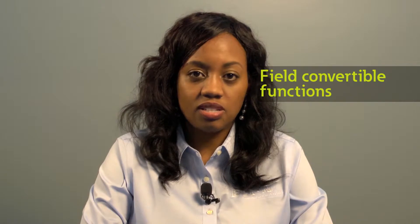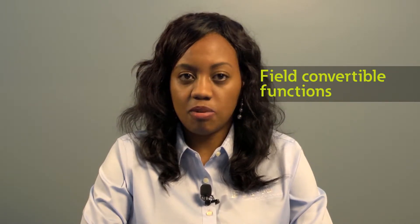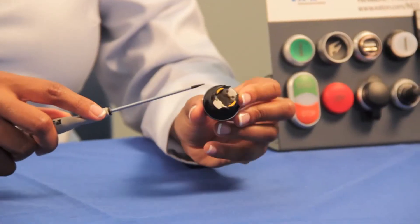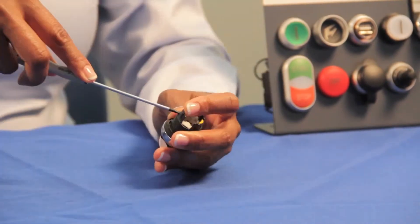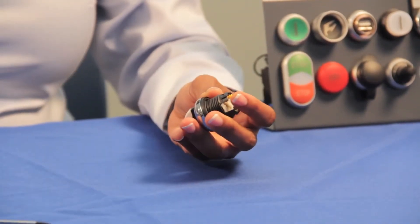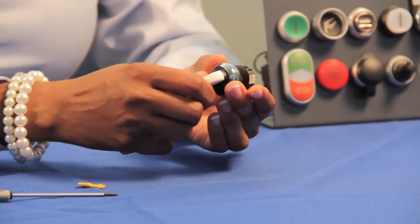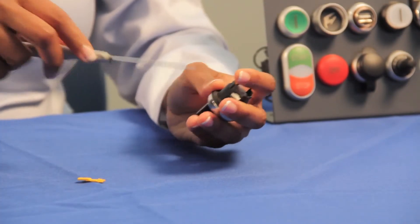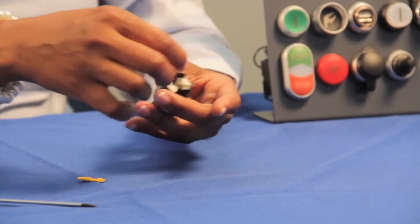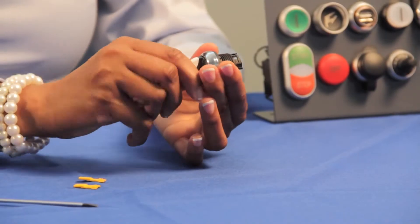You can convert our momentary selective switches to maintained operation by simply removing these yellow levers. If you remove the top lever the switch is now in the maintained position on the right and if you remove the yellow lever at the bottom of the switch now your switch is in a momentary position in the left.